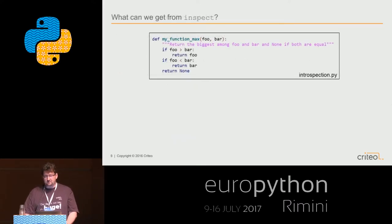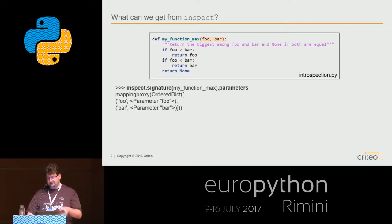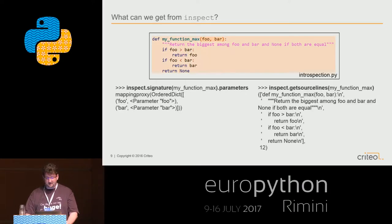Let's go back to our example. What can we do with this library? We can get the exact parameters using inspect.signature - you provide the function, look at the 'parameters' attribute, and get an ordered dict containing the different parameters of the signature. And of course, you can ask for the complete source code of the function.